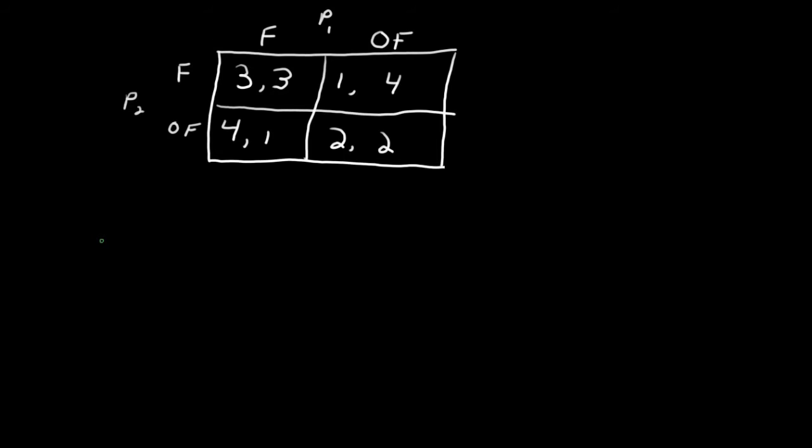If one of the fishermen fishes and the other one overfishes, well, the pond is still okay, but the person that overfished gets a much higher payoff from the one who just fishes normally because he, in essence, steals all of the other players' fish.